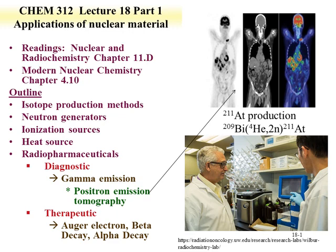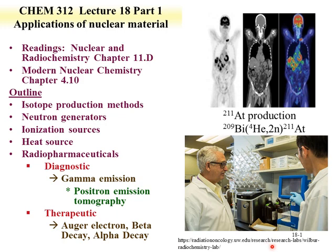This annihilation process is where you get the tomography — imaging of biological functions. Other isotopes are therapeutic, decaying by Auger electron emission, beta decay, or alpha particles. An example is astatine-211, produced by bombarding bismuth-209 with helium-4 particles to produce the desired alpha-emitting astatine-211. An example of the production chemistry and utilization can be found in the laboratory of Scott Wilbur at the University of Washington, where it is used as a therapeutic agent for treatment of cancers.